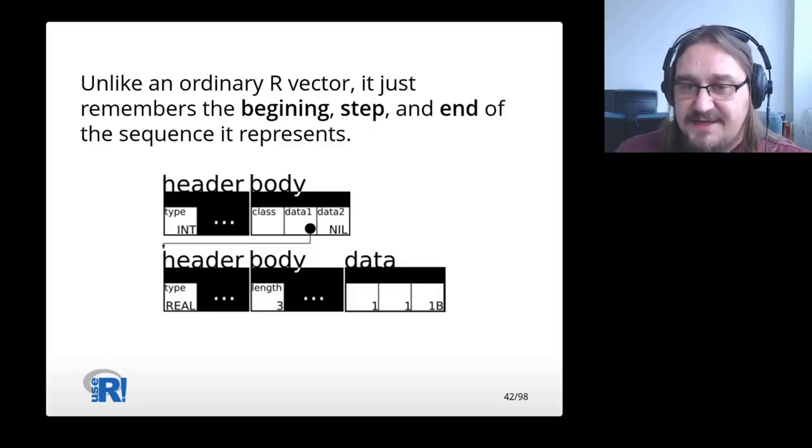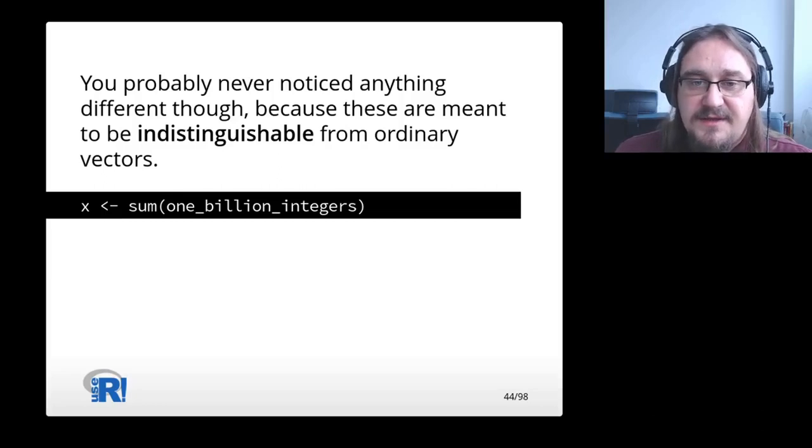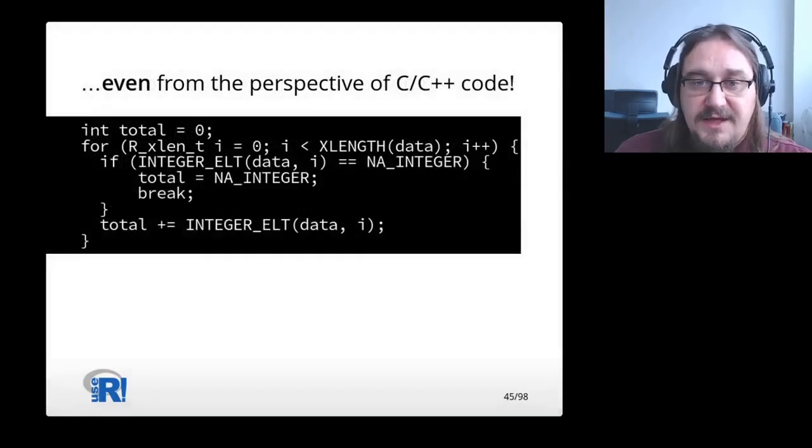Therefore, it does not have a data section that contains all of the values of all of its elements. Instead, it keeps around a three-element vector that just has the sequence's parameters, the beginning, the step, and the end. You probably never noticed anything different, though, because these are meant to be indistinguishable from ordinary vectors. So if you take one of them and execute a sum or anything else, you should get the same result as if it were an ordinary vector. Even from the perspective of C and C++ code.